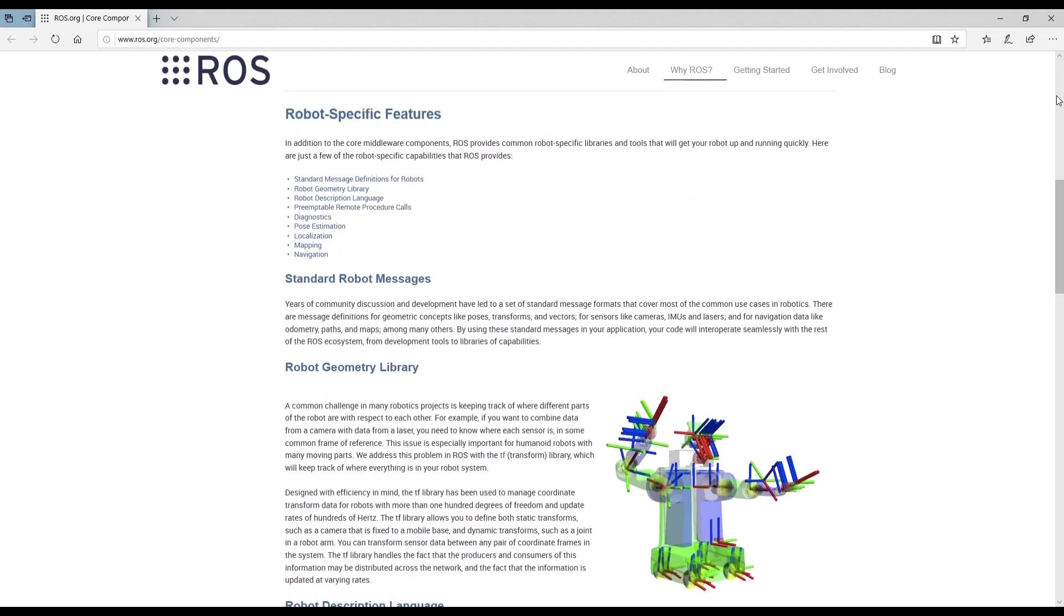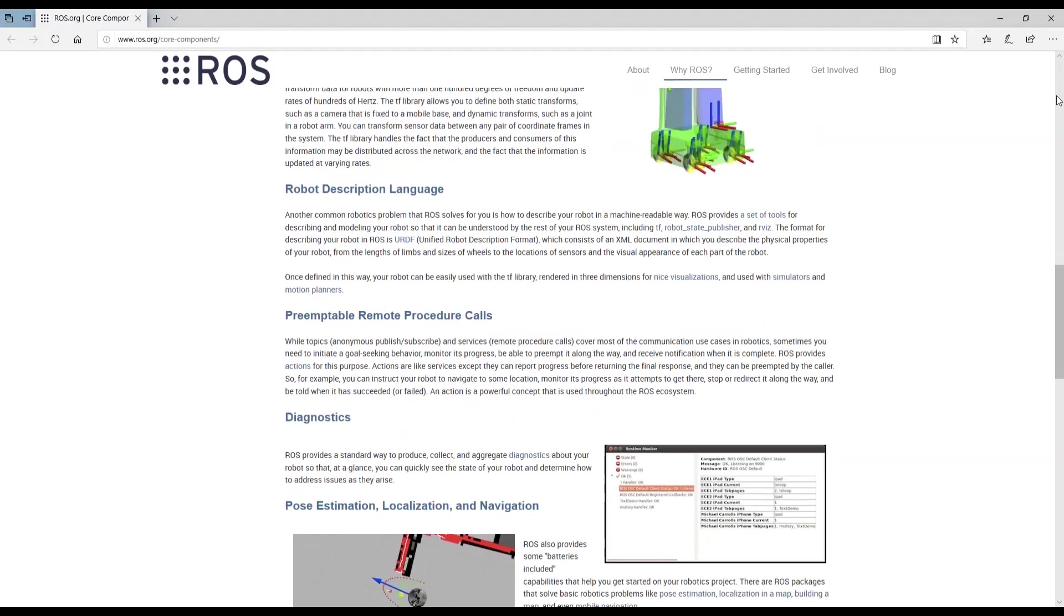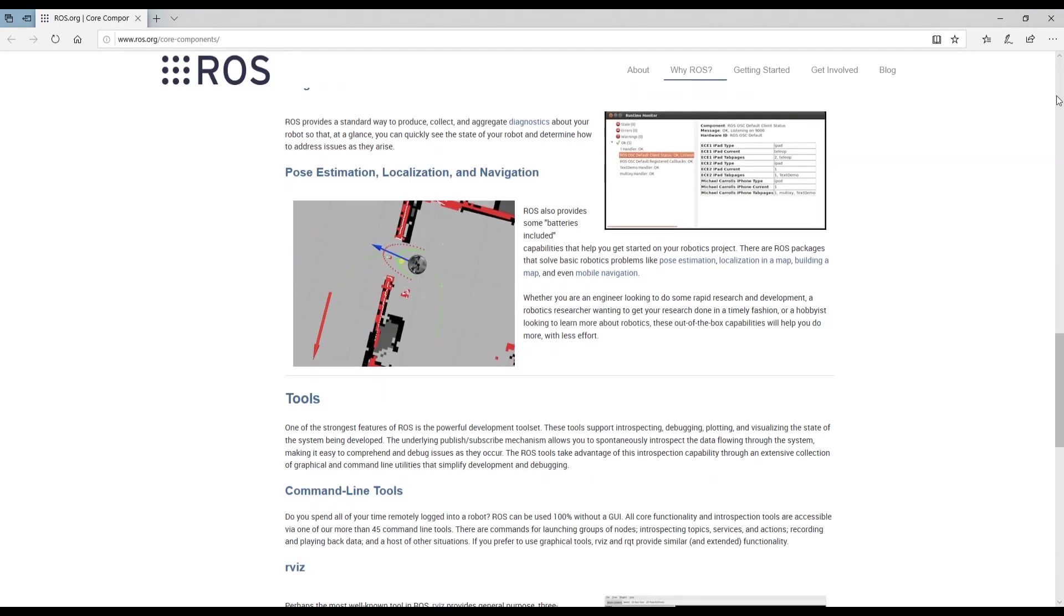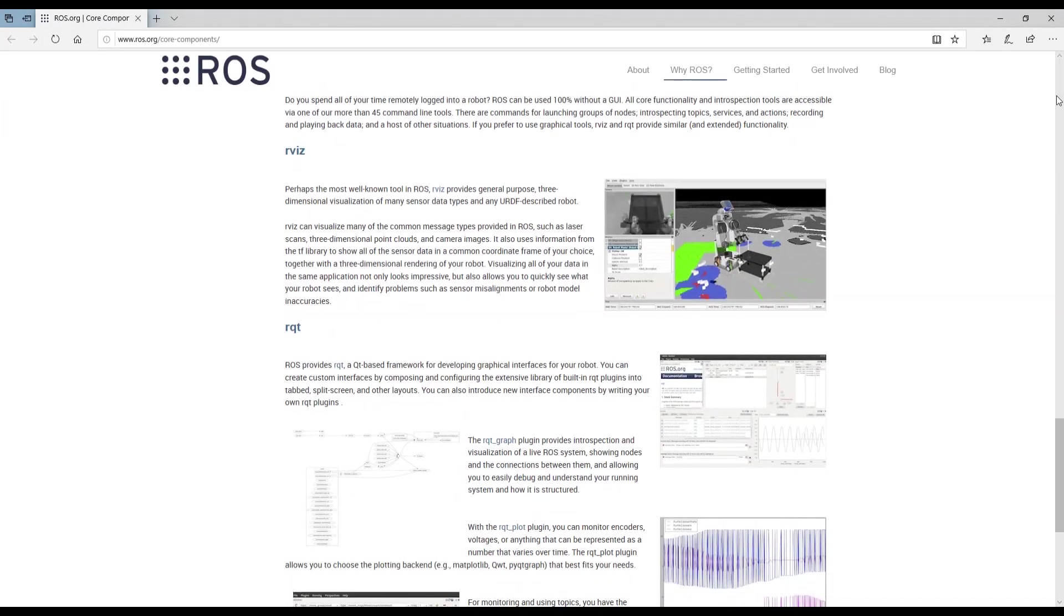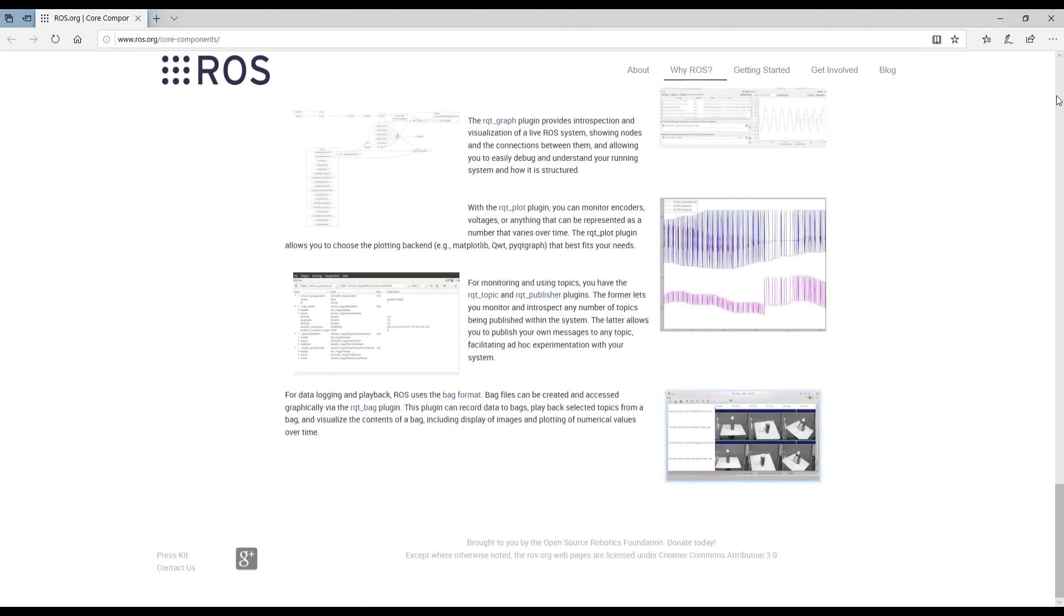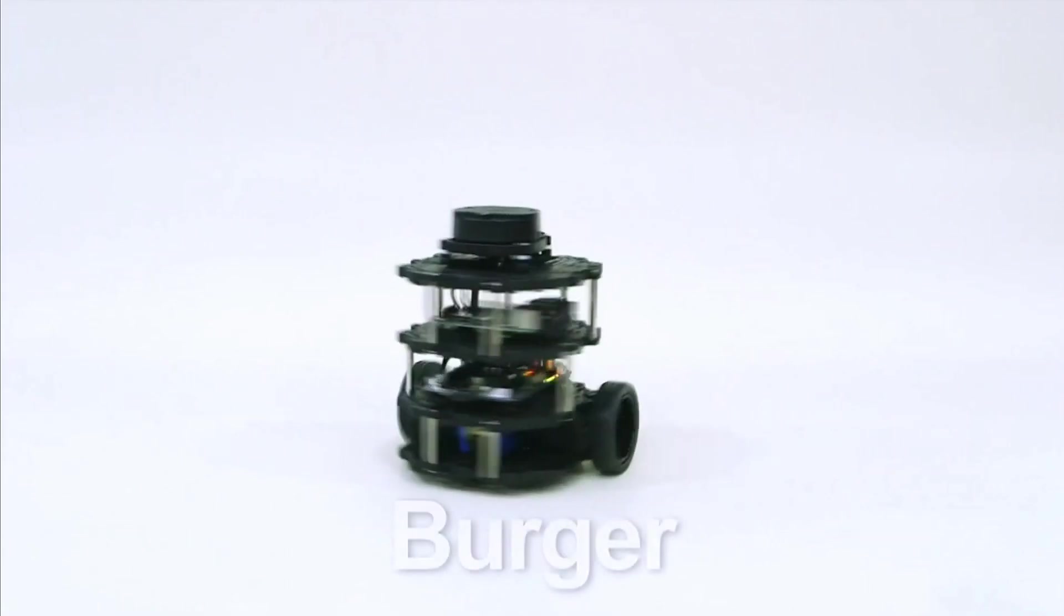Even though ROS is an acronym for Robot Operating System, it is not an operating system, but instead is more of a middleware that ties together device drivers, libraries, visualizers, package management, etc. ROS is open source and free to use.